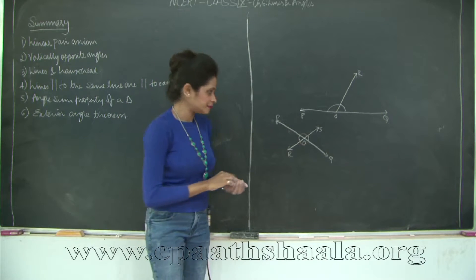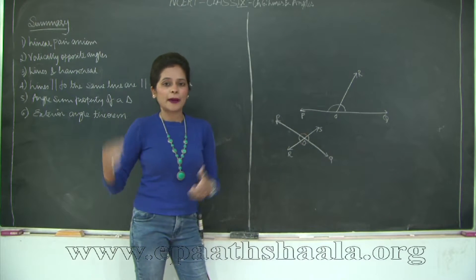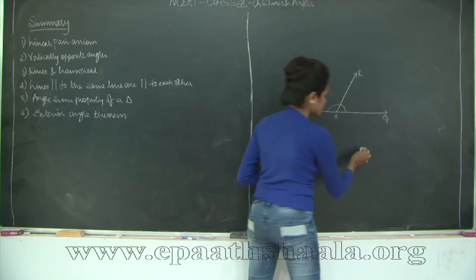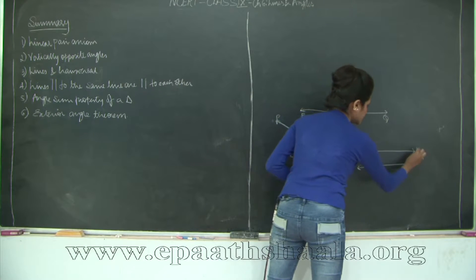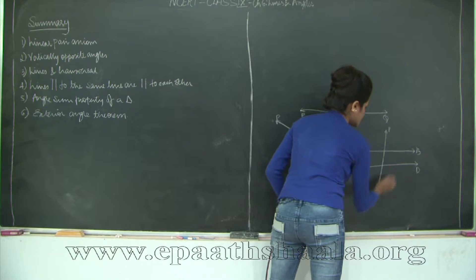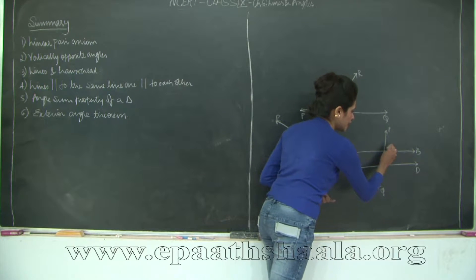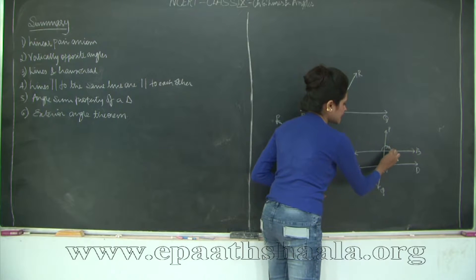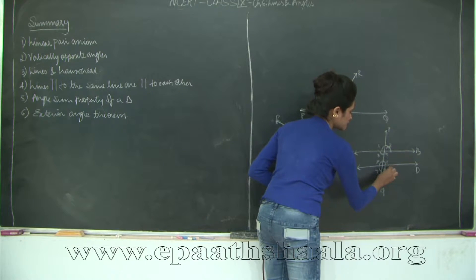Then we have lines and transversal. If I have two parallel lines AB and CD, and PQ is the transversal, when PQ intersects the two lines at two different points M and N, different types of angles are formed. Let me call these angles 1, 2, 3, 4, 5, 6, 7, and 8.